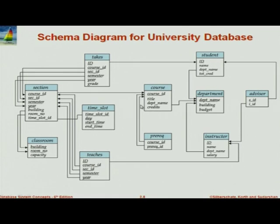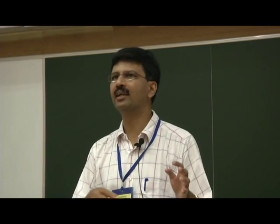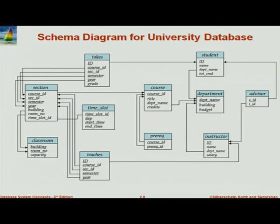So that's courses. Now there is something called a section. What is a section? A course like Databases is offered every year, or maybe twice a year, or in a single semester we may have two different sections of the same course. The section captures all of these — it's a particular offering of a course. In this schema, a section has four fields which form its primary key: a course ID, and a section ID which uniquely identifies the section within a particular semester and year.